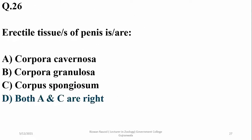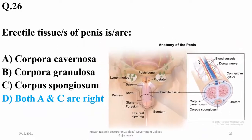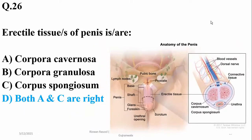Question number twenty-six: the erectile tissues of the penis are corpora cavernosa and corpus spongiosum. These are the two types of erectile tissues — corpus spongiosum and corpus cavernosum.